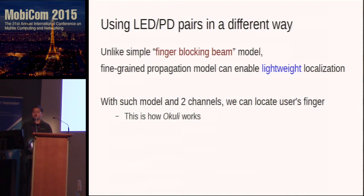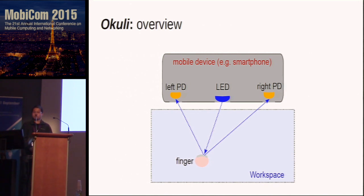Unlike the simple finger-blocking beam model, a fine-grained propagation model can enable lightweight localization, since it will allow us to sense only two channels to get a 2D location rather than sensing many channels. So we only need two light sensors and one light source — and this is basically how Okuli works. Okuli has one LED which illuminates the user's finger in the working area. The finger reflects the light through two different channels into two PDs separated by a distance, and by analyzing the received signal strength from these two PDs, we can compute the location of the user's finger.